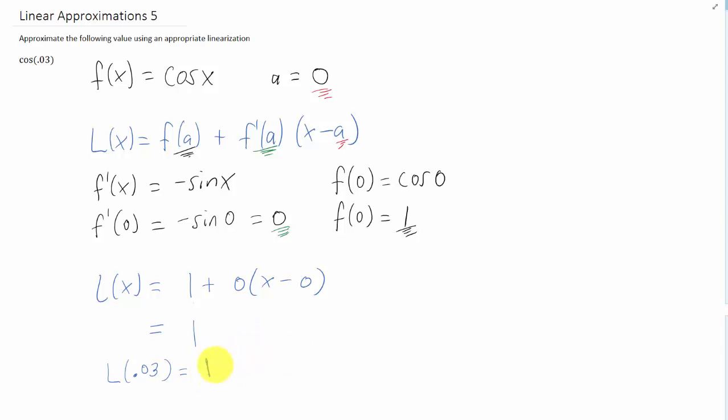Now what we're saying in this particular problem is that this 1 is an approximation to the value of cosine of 0.03. And actually when I plug that into my calculator, I'm getting a value of 0.9955. So hey, actually that 1 was pretty good to several decimal places.